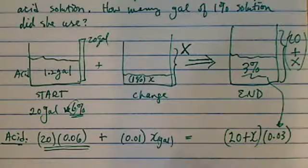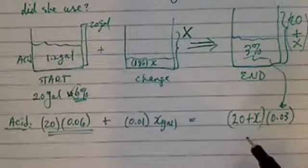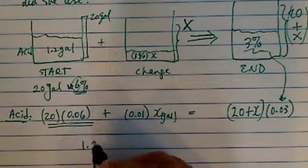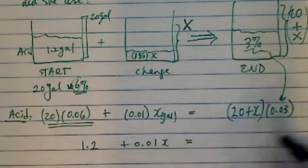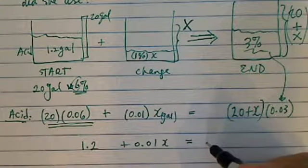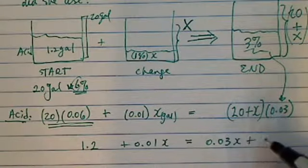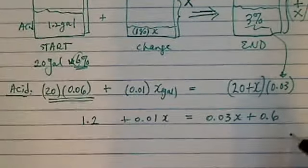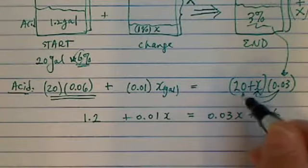So 90% of the work is done if you get the equation over here. Let's solve it. 1.2 plus 0.01X is equal to, let's distribute it here. So I have 0.03X plus 0.6. If you don't see the numbers, all I did is distribute it in here. And you can pause the pulse buttons.